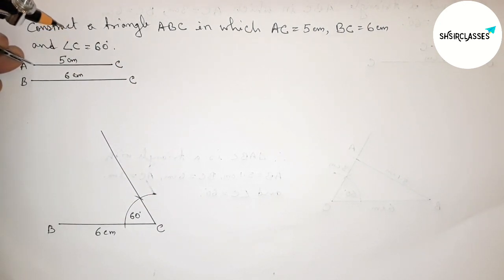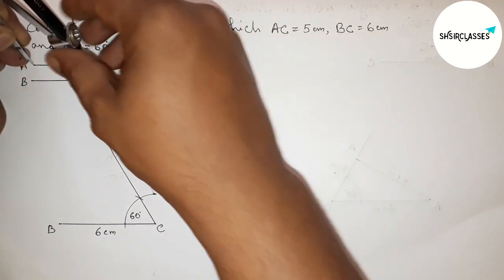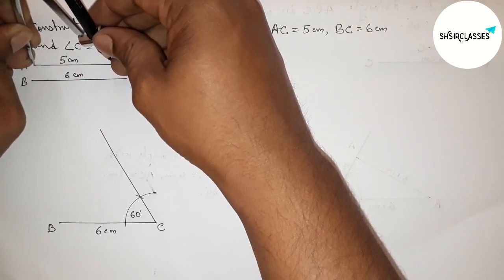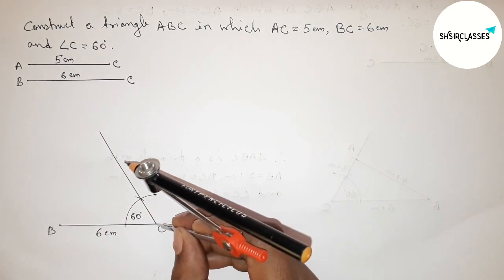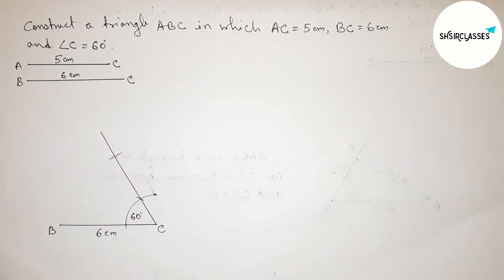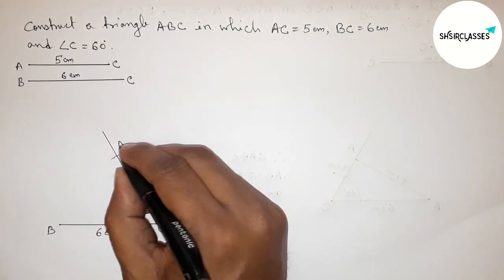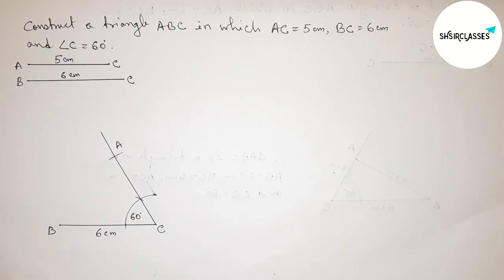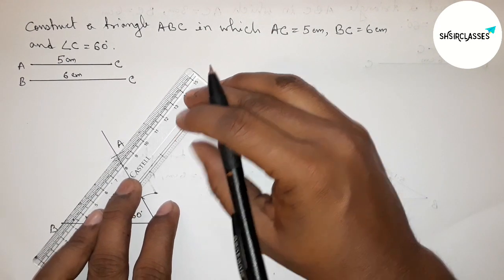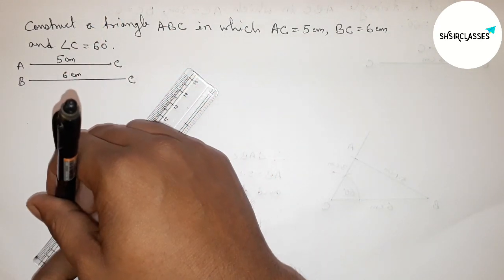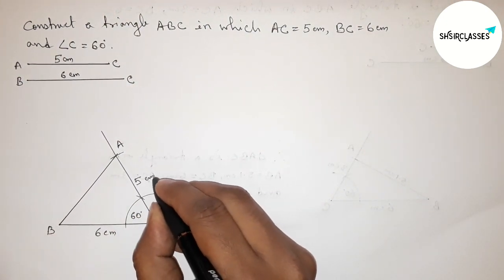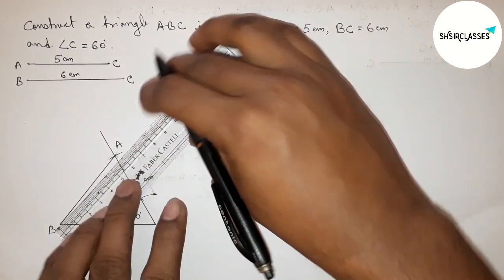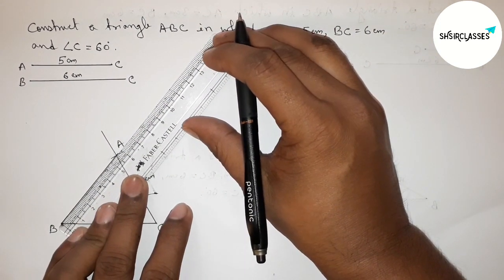Next, taking the length AC equals 5 centimeter with the help of compass. Putting the compass on the point C and cutting here to get point A. Now joining A and B to get triangle ABC. So AC equals 5 centimeter.